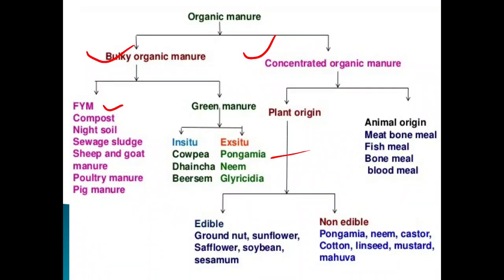Bulky organic manures include FYM (farm yard manure), compost, and night soil. Farm yard manure is the manure which is prepared near the animal shed, well decomposed and well rotten. The raw materials used include animal dung, urine, litter (bedding material of the animals), and unconsumed fodder — essentially animal and plant waste.